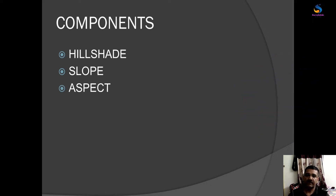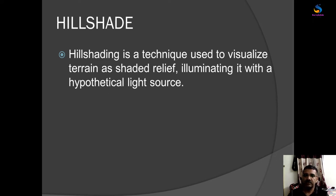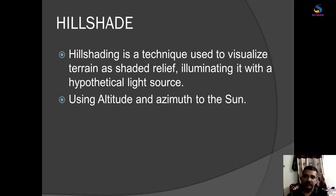Hillshade is a technique used to visualize terrain as shaded relief, illuminating it with a hypothetical light source. This hypothetical light source means that sunlight reflects in a particular direction that we specify. For example, we may want sun from an altitude of 45 degrees and a direction of 315 degrees, or 90 degrees from azimuth. While creating hillshade, we use altitude and azimuth as the light source. Hillshade is used in making shaded relief for clear visibility of the terrain.